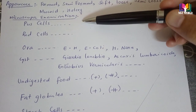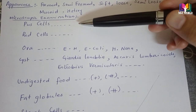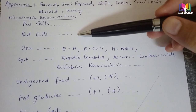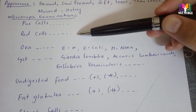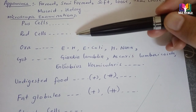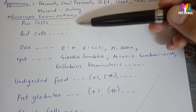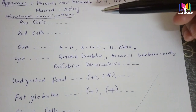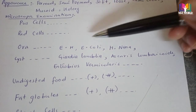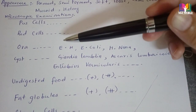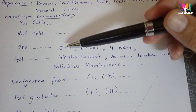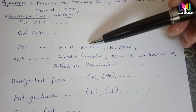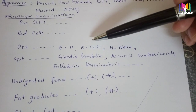Next, the important part is microscopic examination. First, we mention pus cells and red blood cells in the stool. If you see pus cells or red blood cells, you mention how many — 0 to 1 per field, 1 to 2, 2 to 3, however many you see. If not present, you write 'nil'.